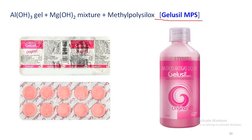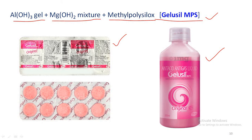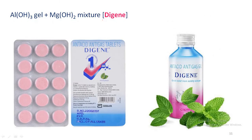Gelusil MPS is available as both tablets and suspension, consisting of a combination of aluminum hydroxide gel, magnesium hydroxide, and methyl polysiloxane. Another product available in the market is Digene, in the form of tablets as well as suspension, for the treatment of acidity. Digene consists of aluminum hydroxide gel and magnesium hydroxide (milk of magnesia) and is used as an antacid.